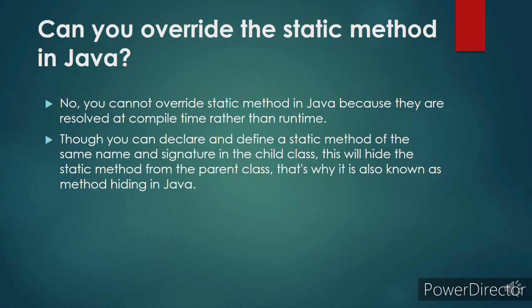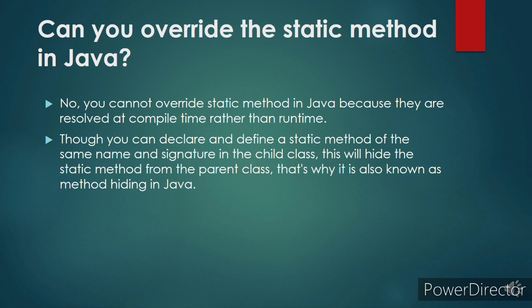Can you override a static method in Java? No. Static methods cannot be overridden because they are resolved at compile time, not at runtime. Overriding is dynamic polymorphism and happens at runtime, whereas static deals with compile-time behavior. If you have a static method in a parent class and a static method with the same signature in a child class, the parent's method is hidden — but this is called data hiding, not overriding.